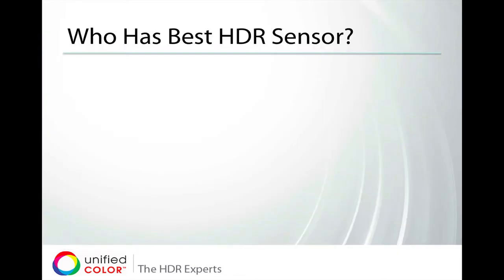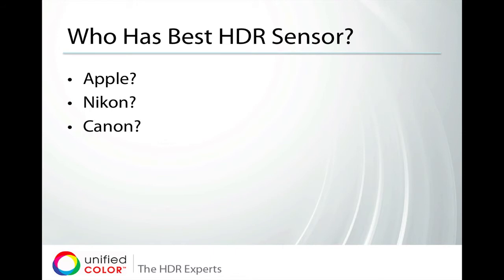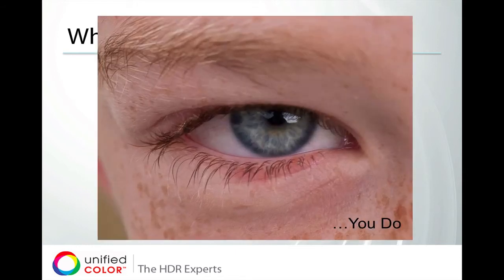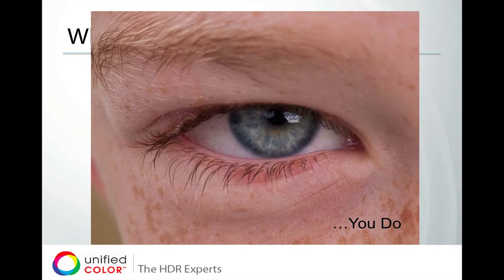The next question is: who makes the best HDR sensor? Is it Apple? They have it in their new iPhone 4S. Nikon has some great SLRs with high ISO performance. Canon also has great cameras and great sensors. Sony has a lot of technology in this space. So who makes the best HDR sensor? The actual answer may surprise you — you have the best HDR sensor.